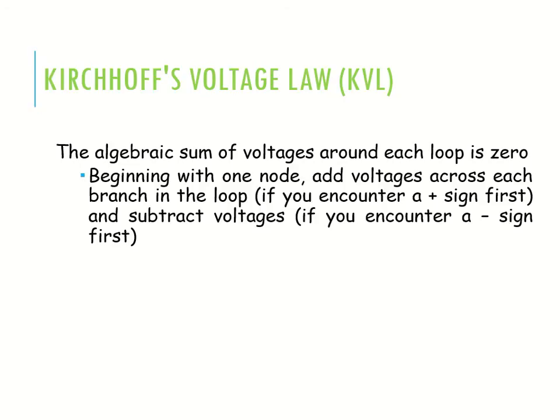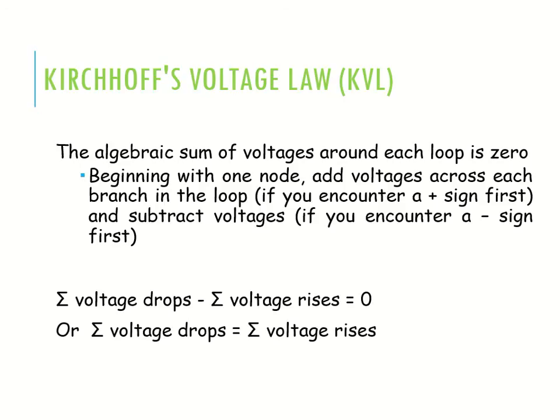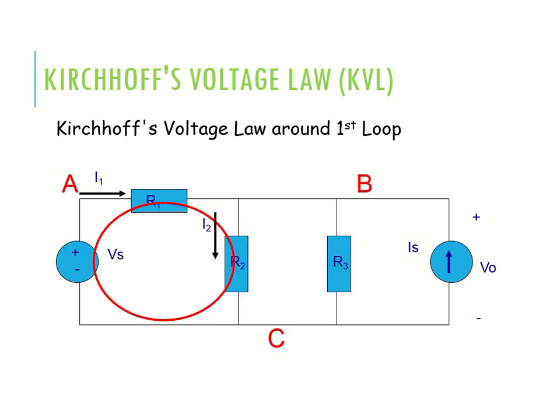KVL states that the algebraic summation of voltage around each loop is equal to zero. Beginning from one node, add all voltage sources and each branch voltage in the loop. If you encounter a plus sign first, then subtract voltage; if you encounter a minus sign first, add it. The equation is: sum of voltage drops minus applied voltage equals zero, which means voltage drop in the circuit equals applied voltage.